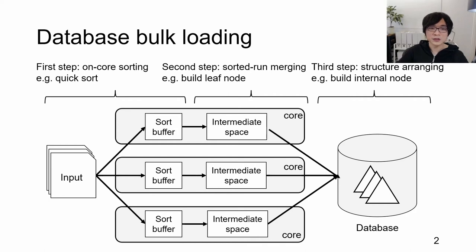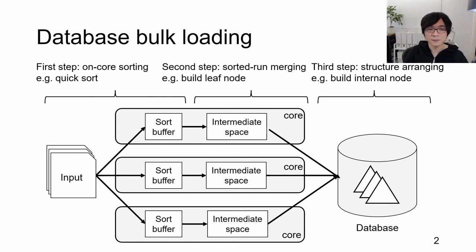Let's consider the design space of database bulk loading with persistent memory. Persistent memory can be used for sort buffers instead of DRAM as a cheaper memory device, though a drawback is slower processing speed. Persistent memory can also be used for intermediate spaces instead of secondary storage like flash memory and magnetic disks as a faster secondary storage, though the drawback is the higher cost per bit.